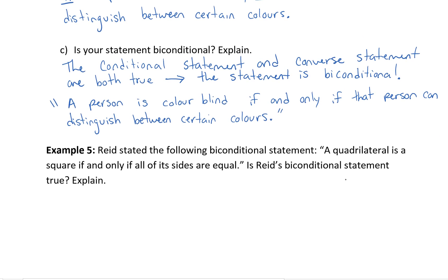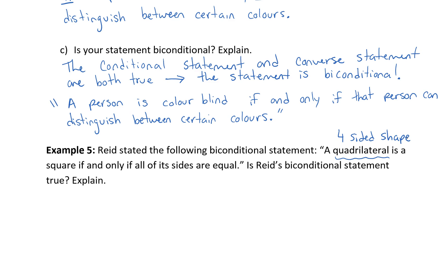There's one last example. Reed stated the following bi-conditional statement: a quadrilateral is a square if and only if all of its sides are equal. Is Reed's bi-conditional statement true? This is similar to example four but you're working backwards — starting at the bi-conditional and getting back the converse, then testing whether or not there's a counterexample. I'd like you to try that one on your own. Reminder: a quadrilateral is a four-sided shape, so think of rhombus, rectangle, parallelogram, square — those are all examples. We'll go over that one in class.